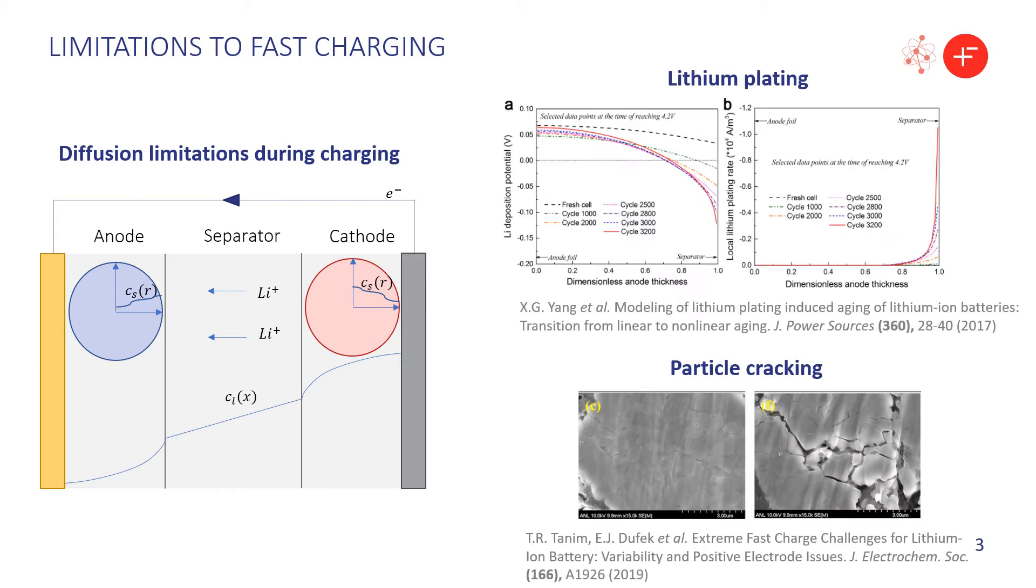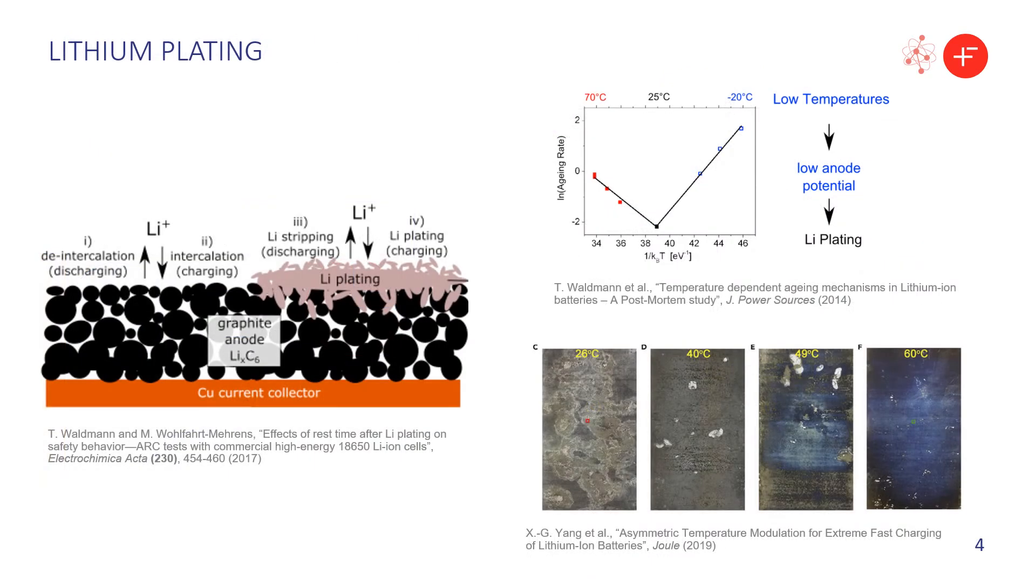Additionally, as the surface of the graphite anode becomes saturated, the lithium ions that arrive there may deposit as metallic lithium instead of intercalating. This phenomenon is called lithium plating and it is a big problem because it leads to rapid capacity fade and can cause internal short circuits and thermal runaway in extreme cases. Graphite is particularly susceptible to lithium plating because its open circuit potential is very close to that of lithium, so it is relatively easy to make plating thermodynamically possible if we charge the battery too fast or if we charge at low temperatures, which make the diffusion processes even slower.